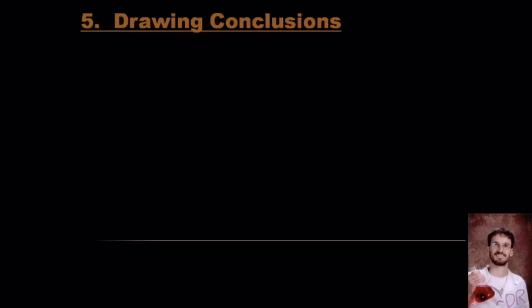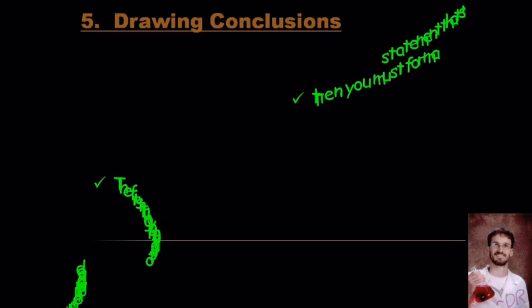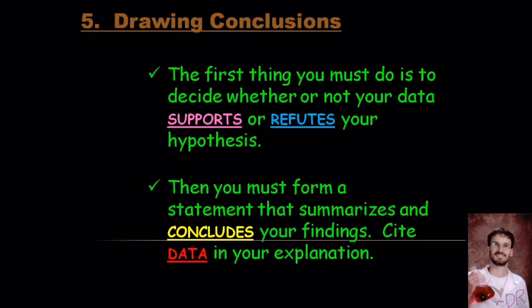Anytime that you do the last part of the scientific method, you should always start with deciding if your data supports or refutes your hypothesis. So you have your hypothesis, you have that if-then-because statement, you have the if I do this, then this will happen because of this.